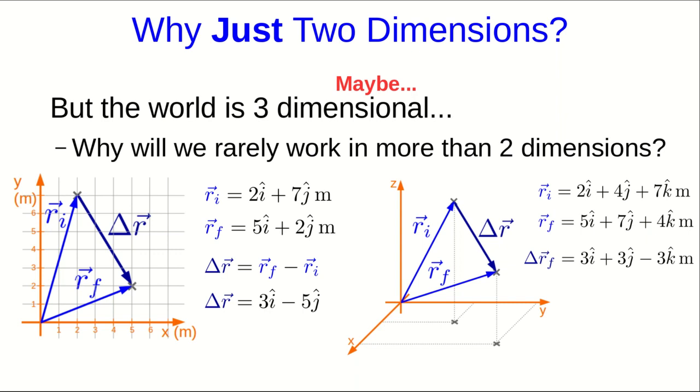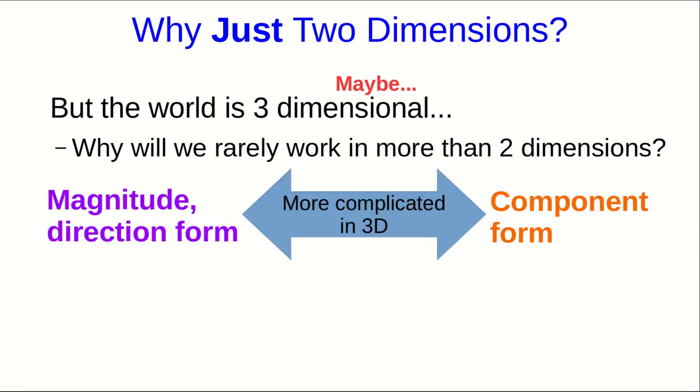So there's really no difference between working in two dimensions and three dimensions, except that there's more bookkeeping in three dimensions. Now, I don't want you to think that there's no difference between working in two dimensions and working in three. For example, the job of going from magnitude direction form to component form, or the other way, is quite a bit more complicated in three dimensions than it is in two. But that's just a mathematical complication. The point is that there's, for the moment, no physics that we need three dimensions to describe that we can't describe just as well in two dimensions.